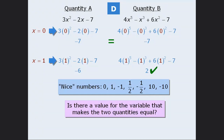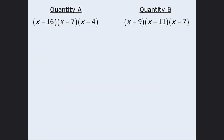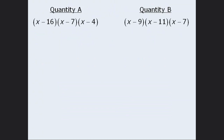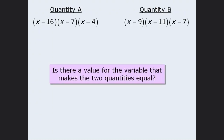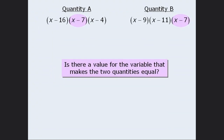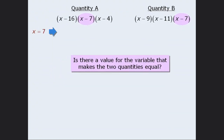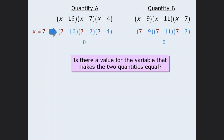Now that you understand the strategy, you might want to pause the video and try the next question before continuing. Once again, since we have variables in the quantities, one approach is to consider plugging in numbers. If we go with that approach, it's a good idea to ask: is there a value for the variable that makes the two quantities equal? Notice that both quantities consist of products of binomials, and both of them feature the binomial x minus 7. So if we let x equal 7 and plug 7 into both quantities, both of these binomials evaluate to be 0, and any product that includes 0 must evaluate to be 0. So we've quickly shown that the two quantities can be equal, which means the correct answer here must be either C or D.